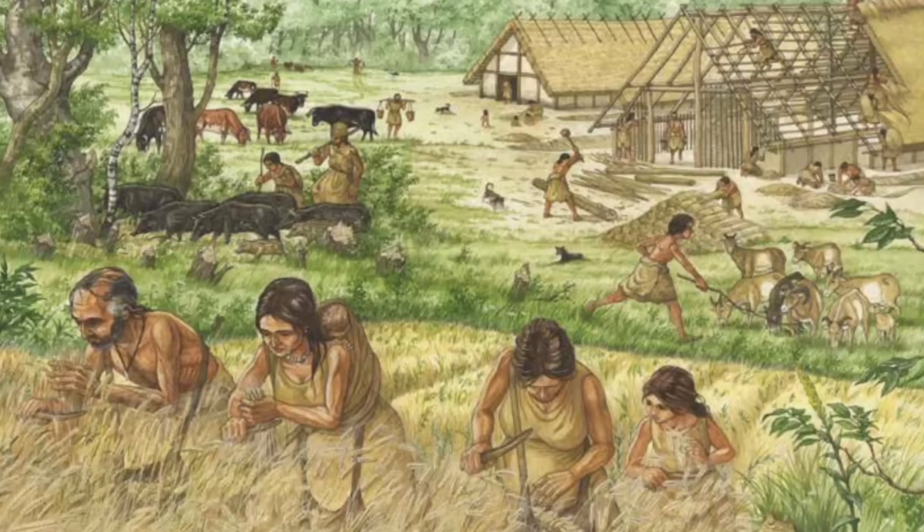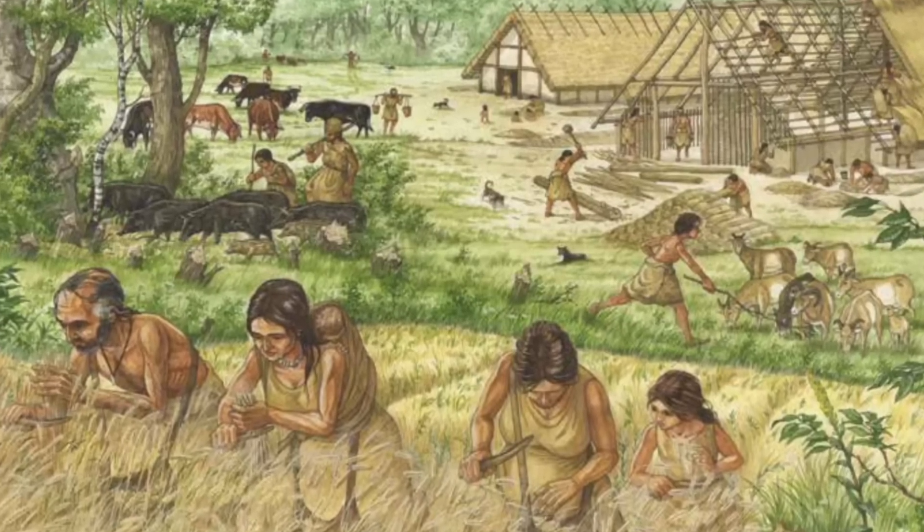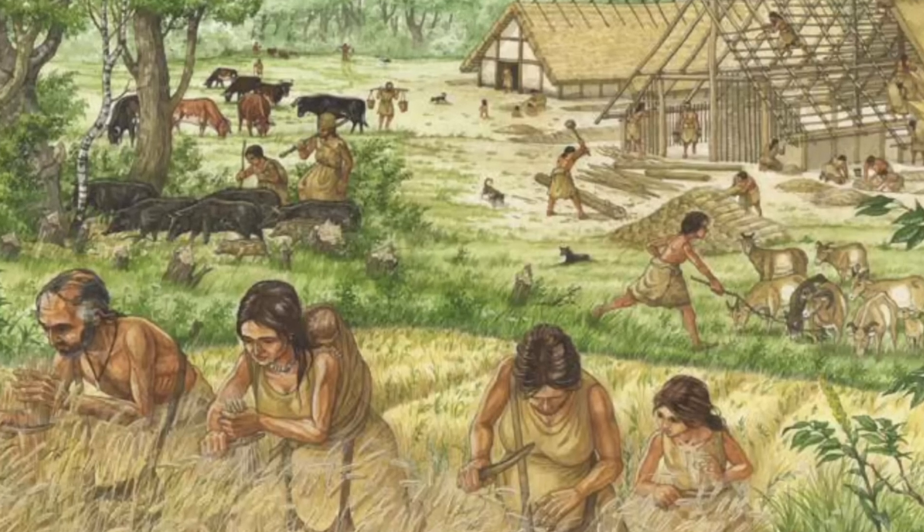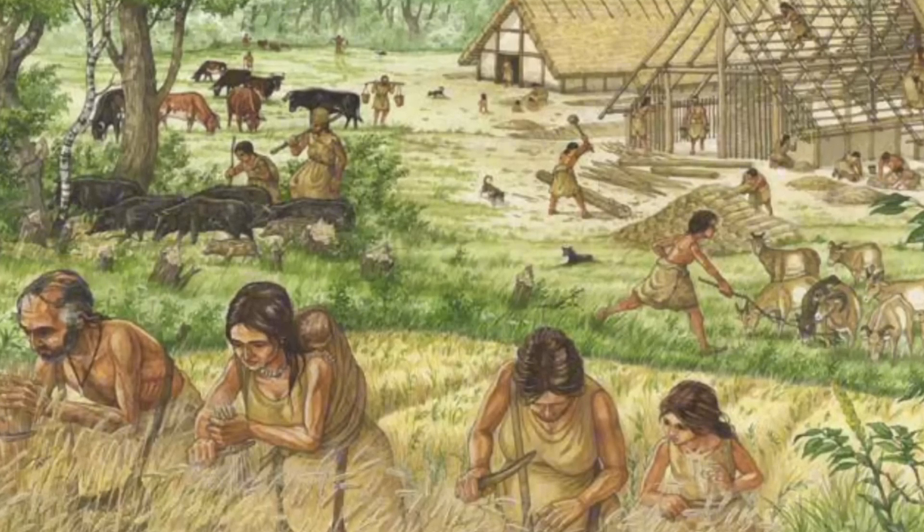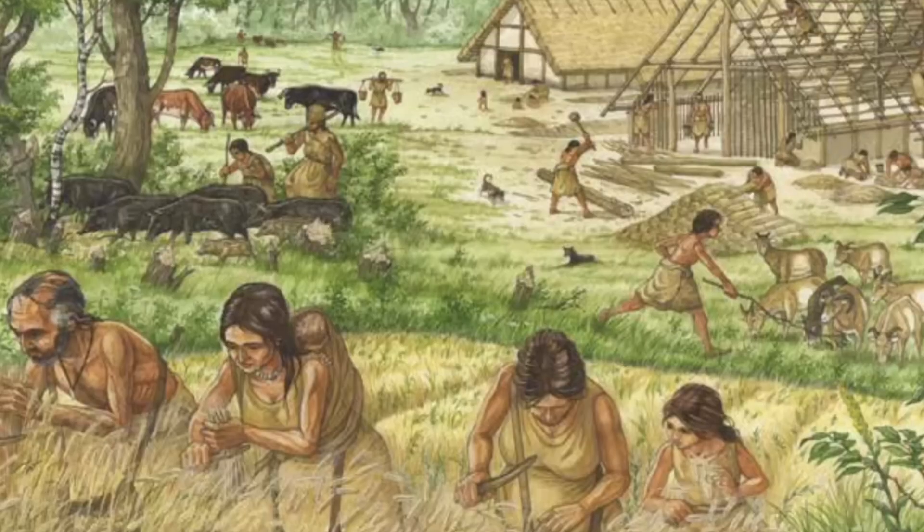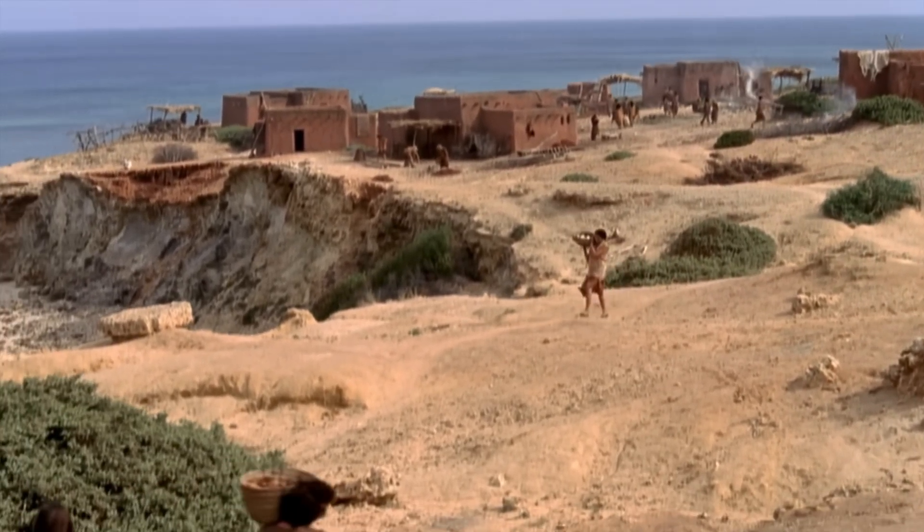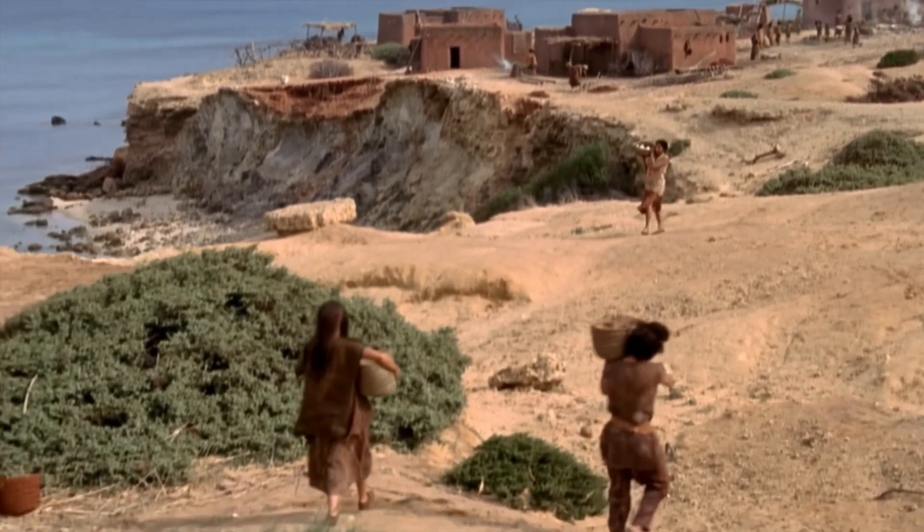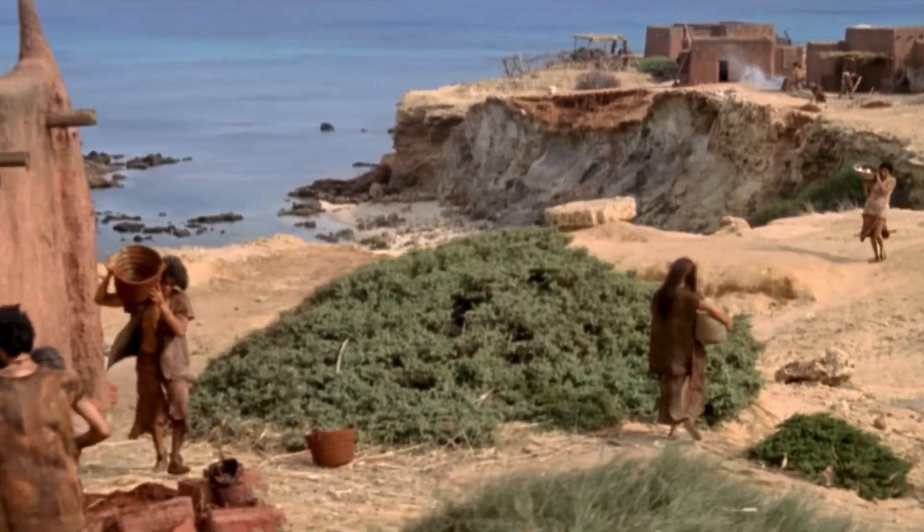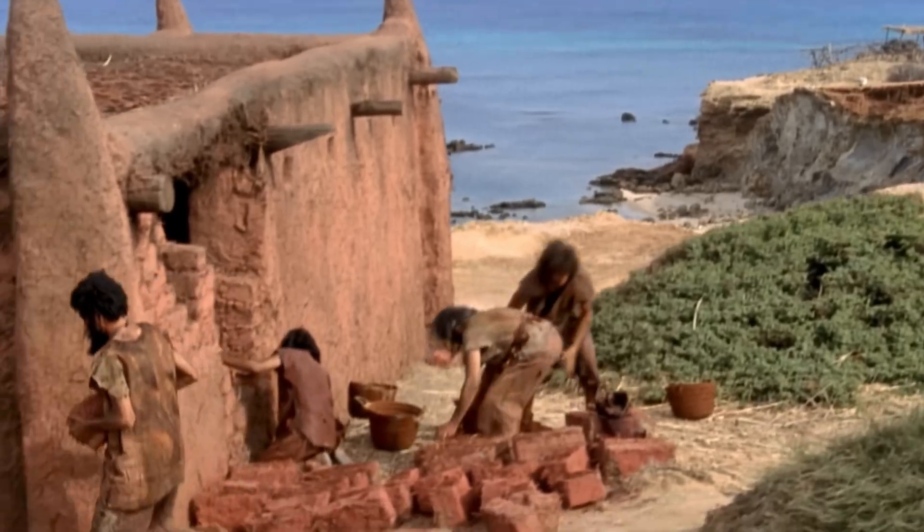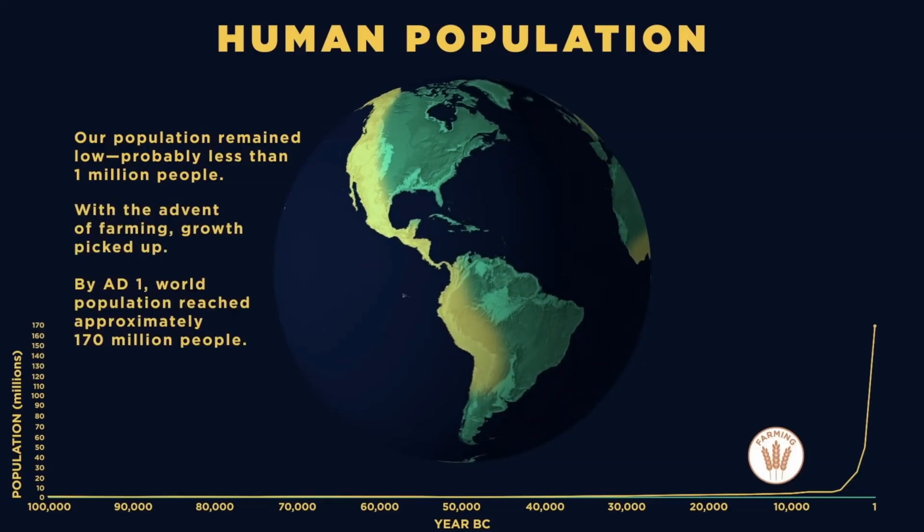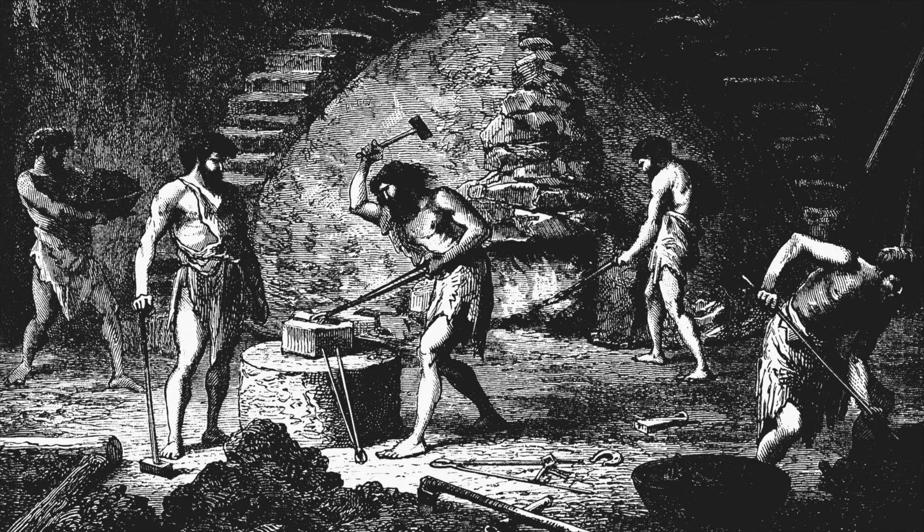Instead of hunting and foraging for food, humans began to domesticate animals and cultivate crops, providing a stable and abundant food supply that allowed us to settle in one place, which in turn led to the establishment of permanent villages and towns. This shift, the agricultural revolution, laid the foundation for the rise of civilization by providing the necessary conditions for population growth, economic complexity, and technological innovation.